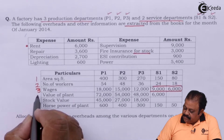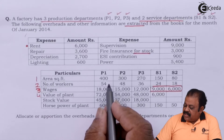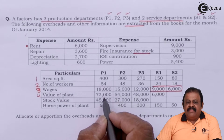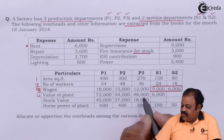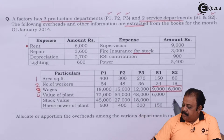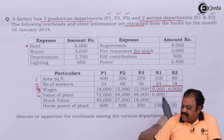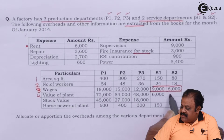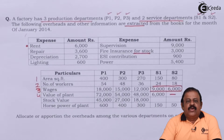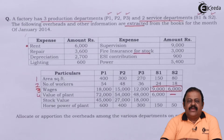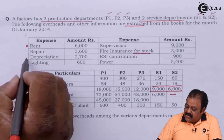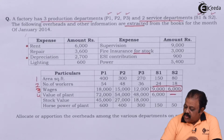Value of plant: production department 1 — 72000, P2 — 54000, P3 — 48000, service department 1 — 6000. Service department 2 has no plant, so we take the ratio of plant value to allocate expenses like depreciation.